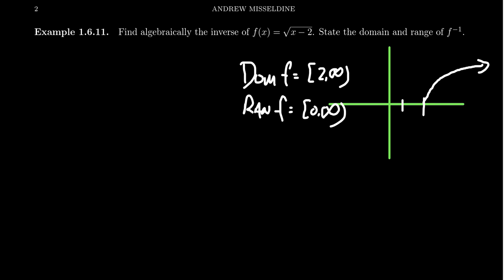We can already predict what the graph of f inverse is going to look like. If we draw the diagonal line y equals x, we know that the graph of f inverse will be the reflection of the original function f across this diagonal line, giving us something like the following. The white graph here was f.